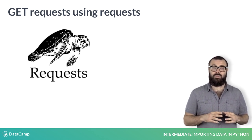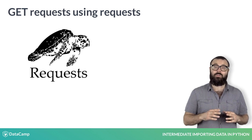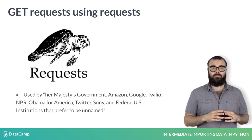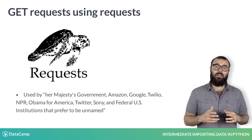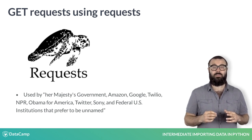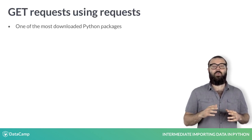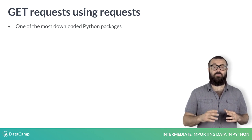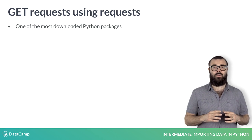The following organizations claim to use requests internally: Her Majesty's Government, Amazon, Google, Twilio, NPR, Obama for America, Twitter, Sony, and federal US institutions that prefer to be unnamed. Moreover, requests is one of the most downloaded Python packages of all time, pulling in over 7 million downloads every month.